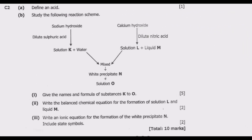Question B: state the following reaction scheme. We have sodium hydroxide reacting with dilute sulfuric acid to give solution K plus water. Then calcium hydroxide reacts with dilute nitric acid to give solution L and liquid M. Then the two mixtures are mixed, giving a white precipitate N and solution O. Roman numeral one: give the names and formulas of substances K through O.